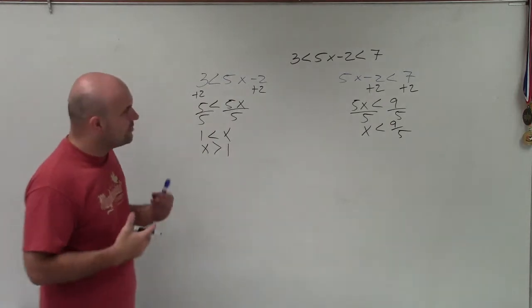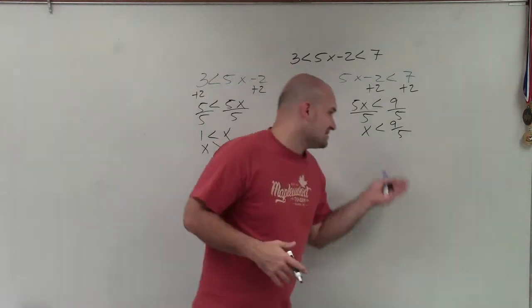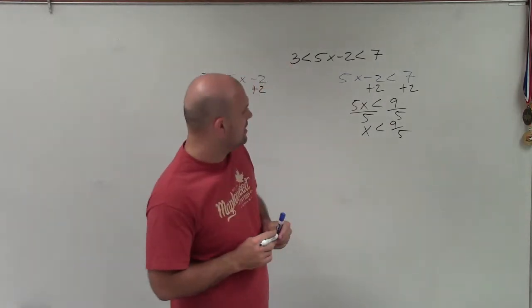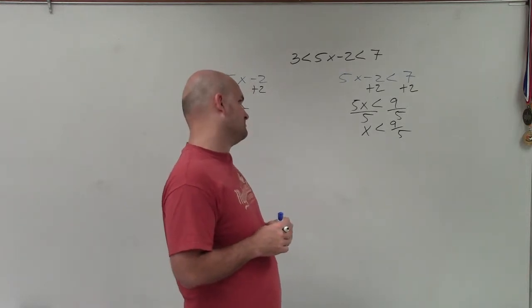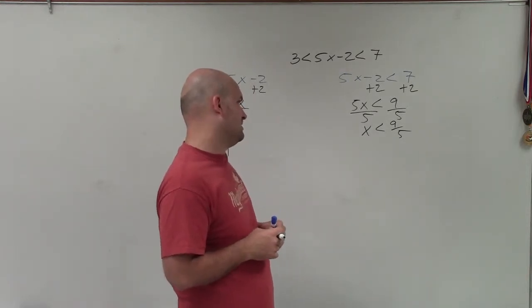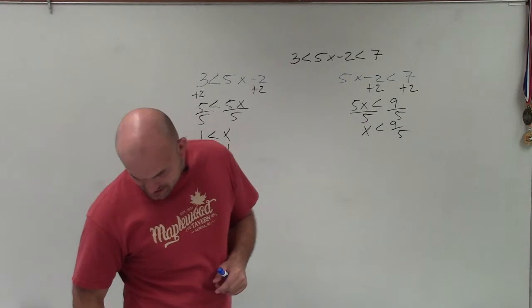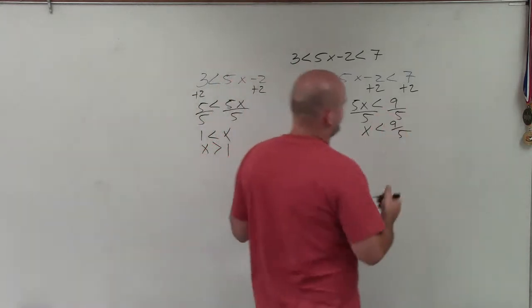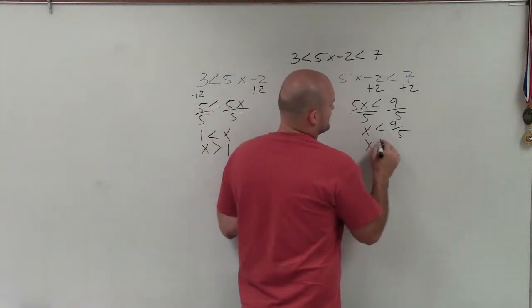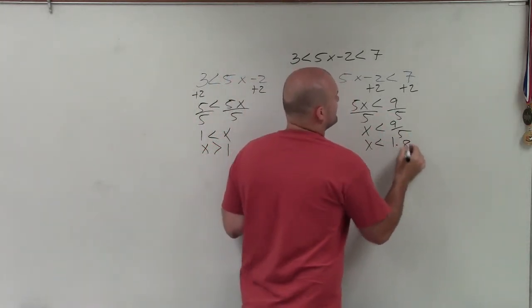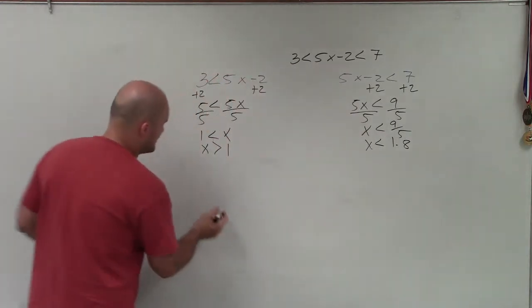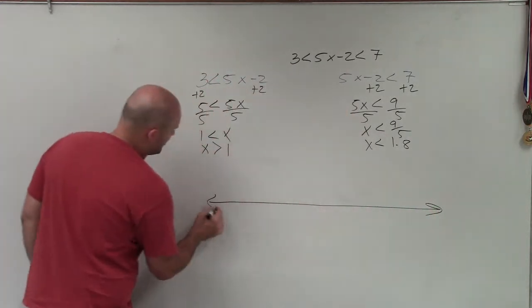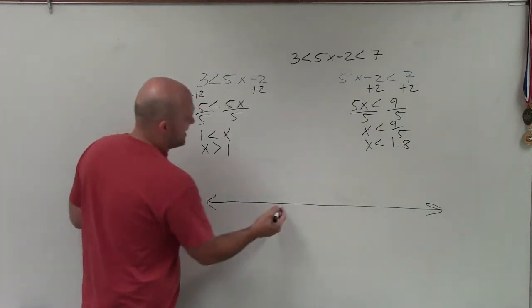So 9 fifths, let's see. 9 divided by 5, 1.8. So x is less than 1.8. And the reason why I'm using the decimal version is because when we create our number line, I kind of want to know a little bit better idea of where exactly this is at.